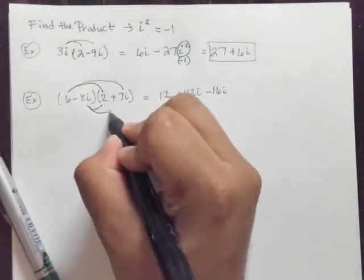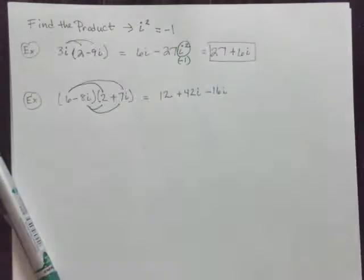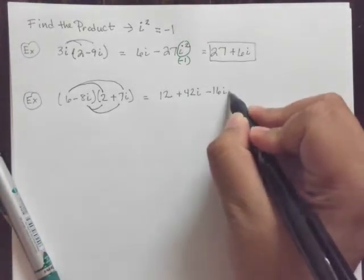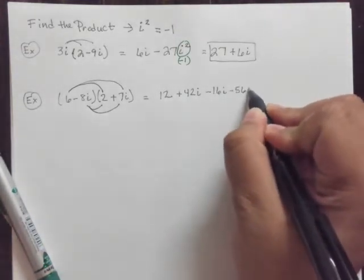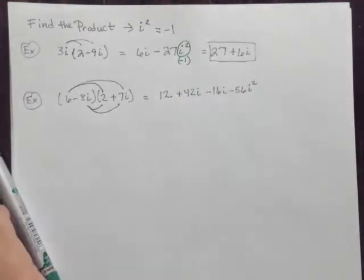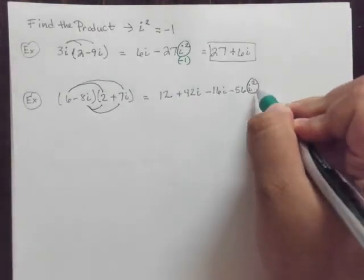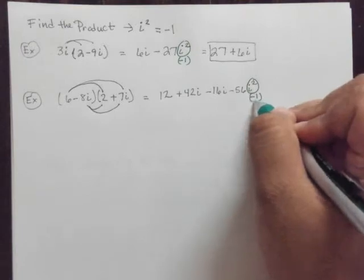And the negative 8i times 7i, that gives us a negative 56i by multiplication. Or actually, negative 56i squared, I should correct myself. All right, and now we just recall this important fact, that this right here is really negative 1.